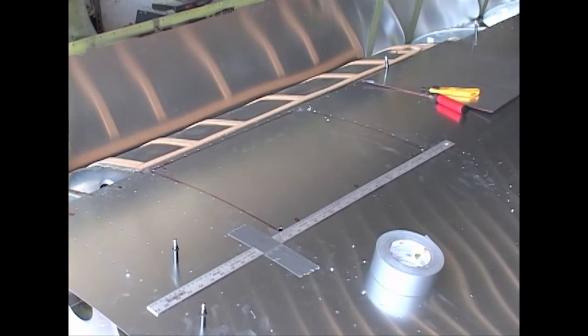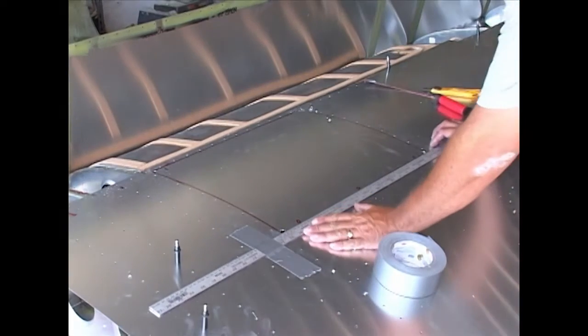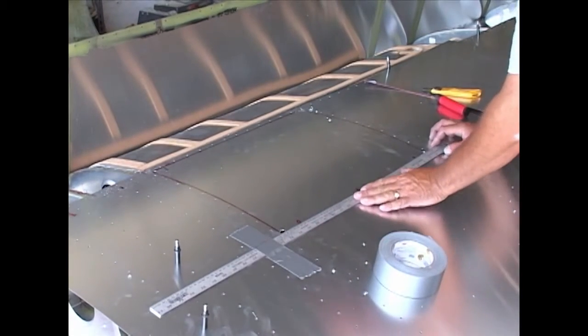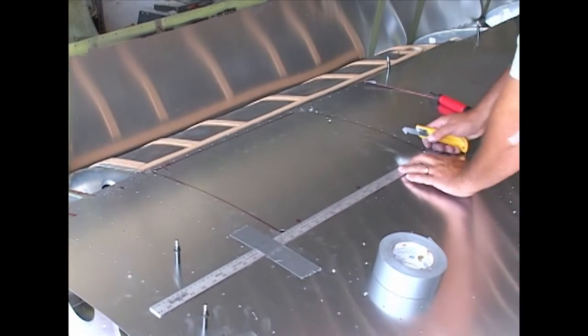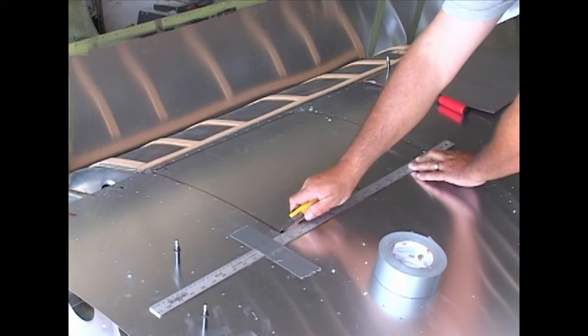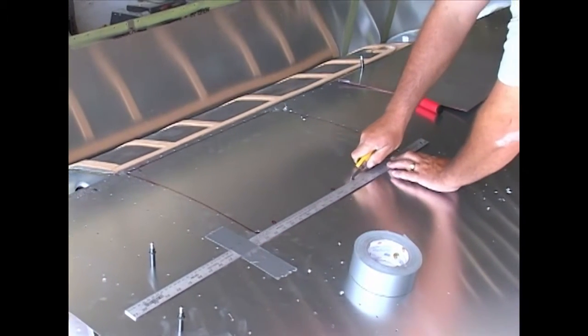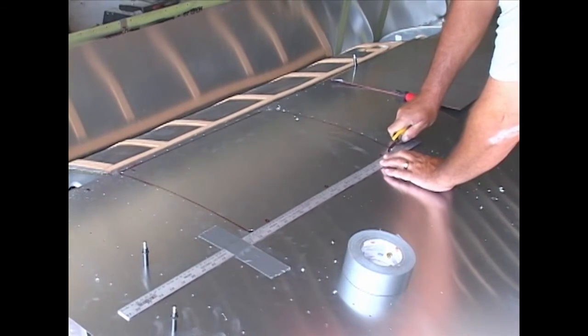Our method for removing the section of skin for the baggage locker is to use a knife and score the skin. We have taped down a ruler to act as our straight edge.